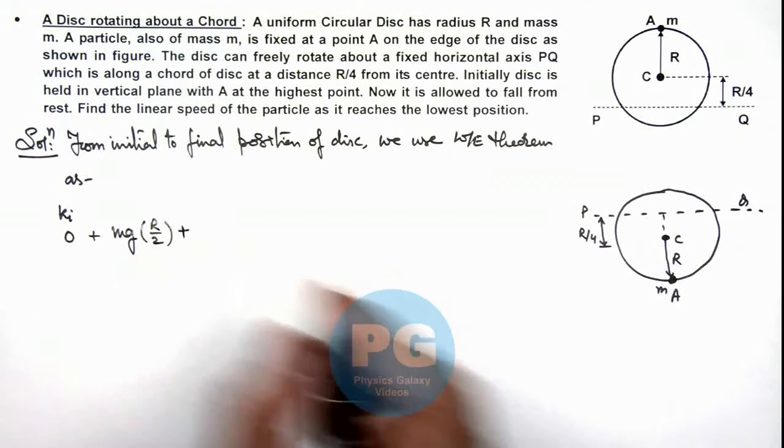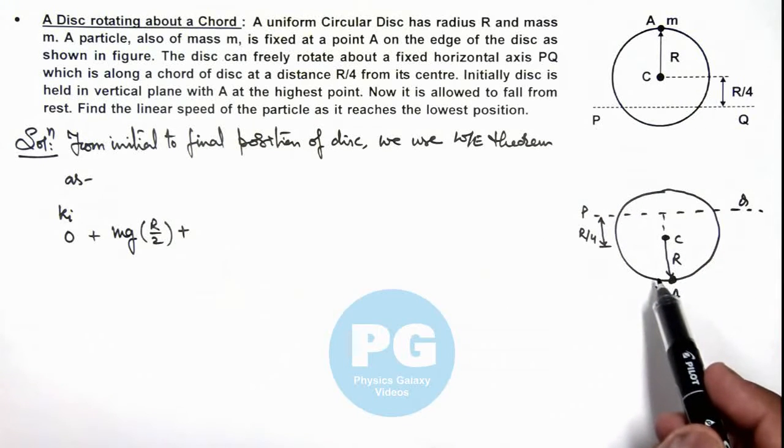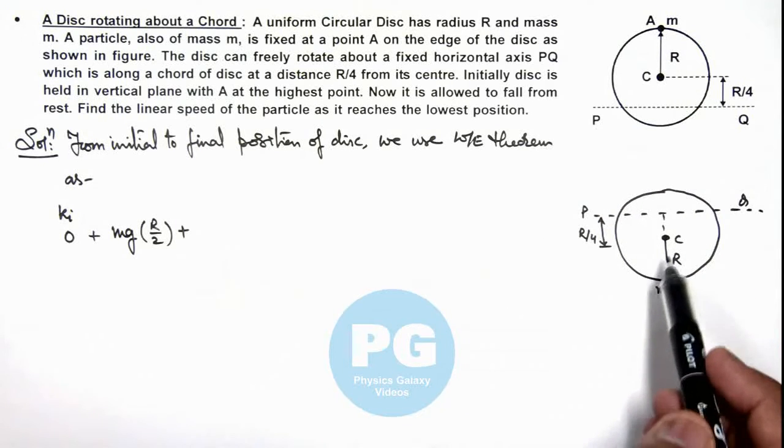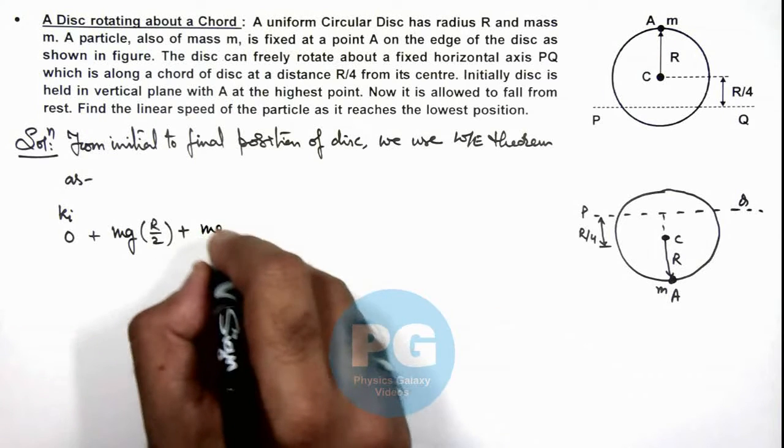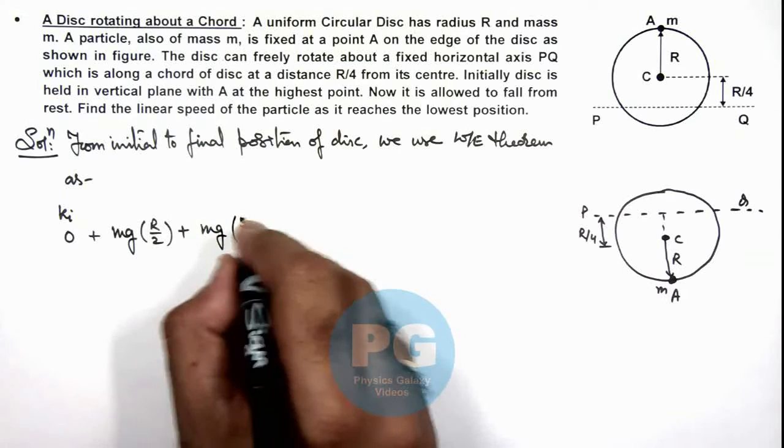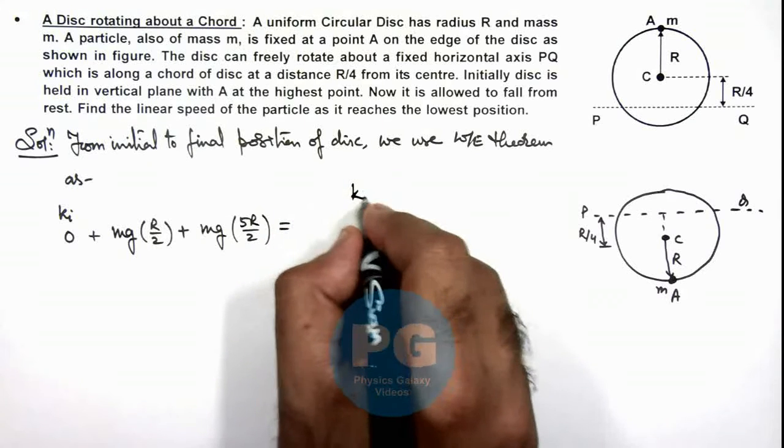Plus work done by gravity on this particle which has fallen by distance twice of R plus R by 4, that is 5R by 2, will be mgh, and that is 5R by 2.